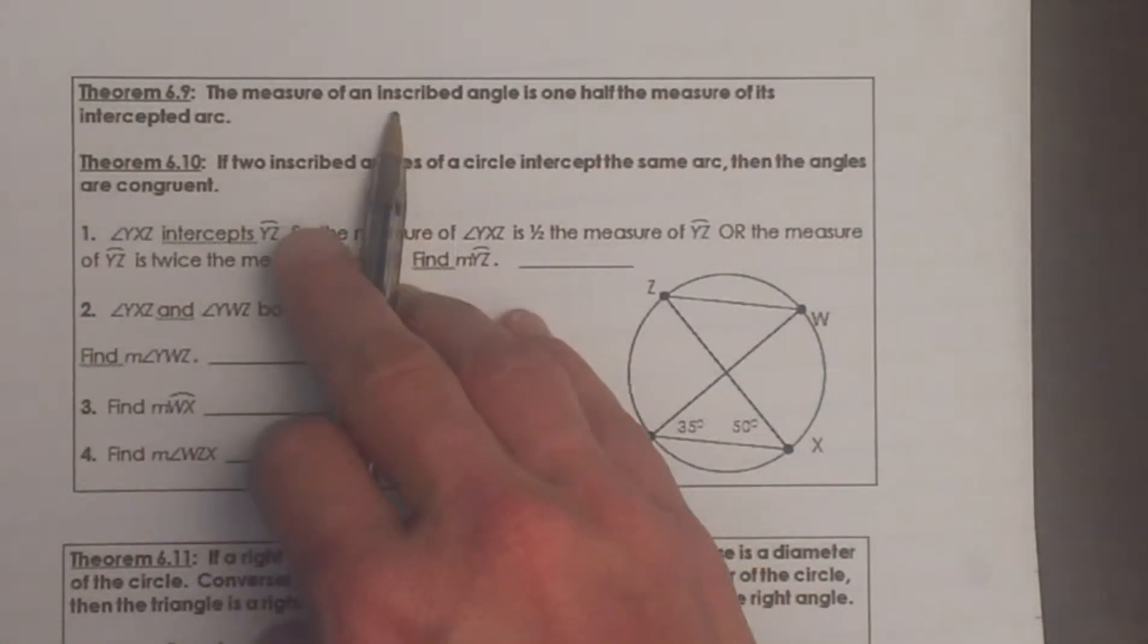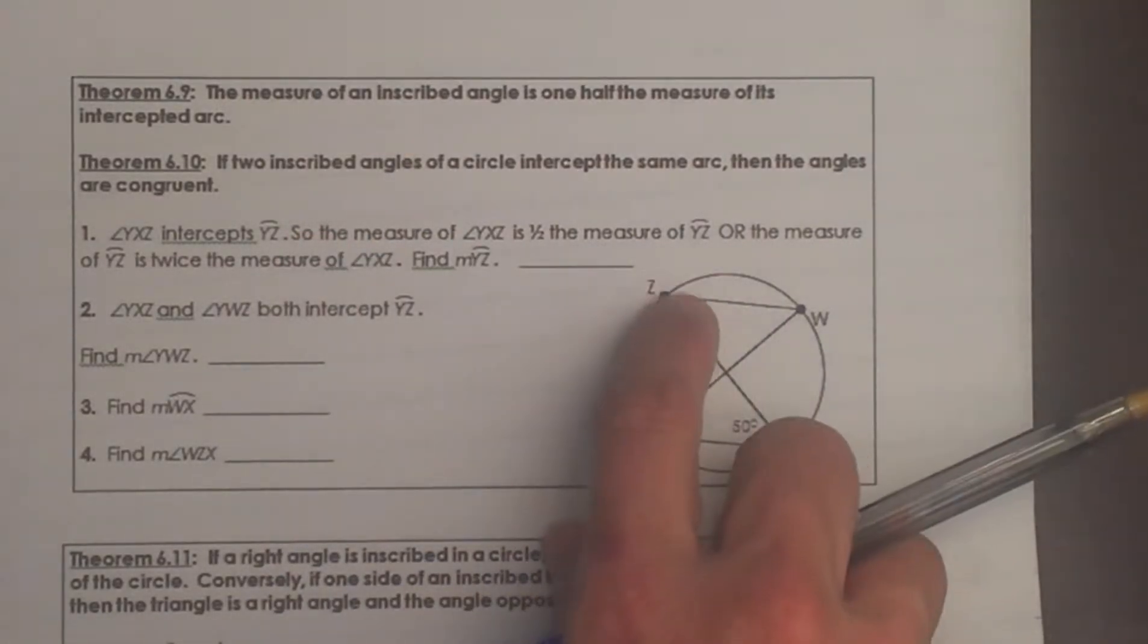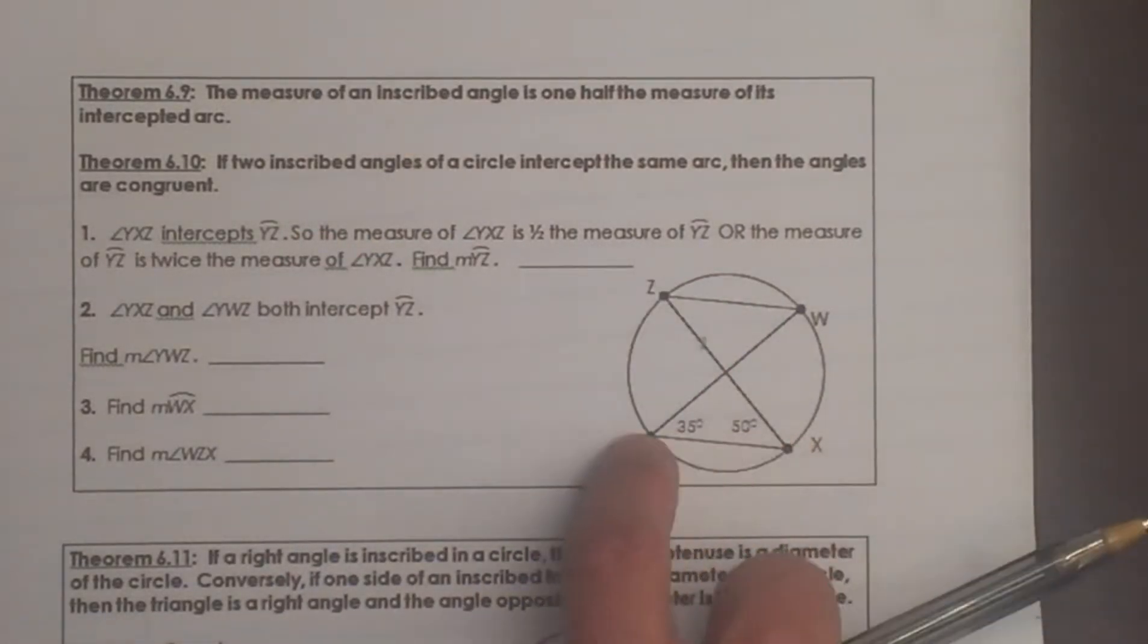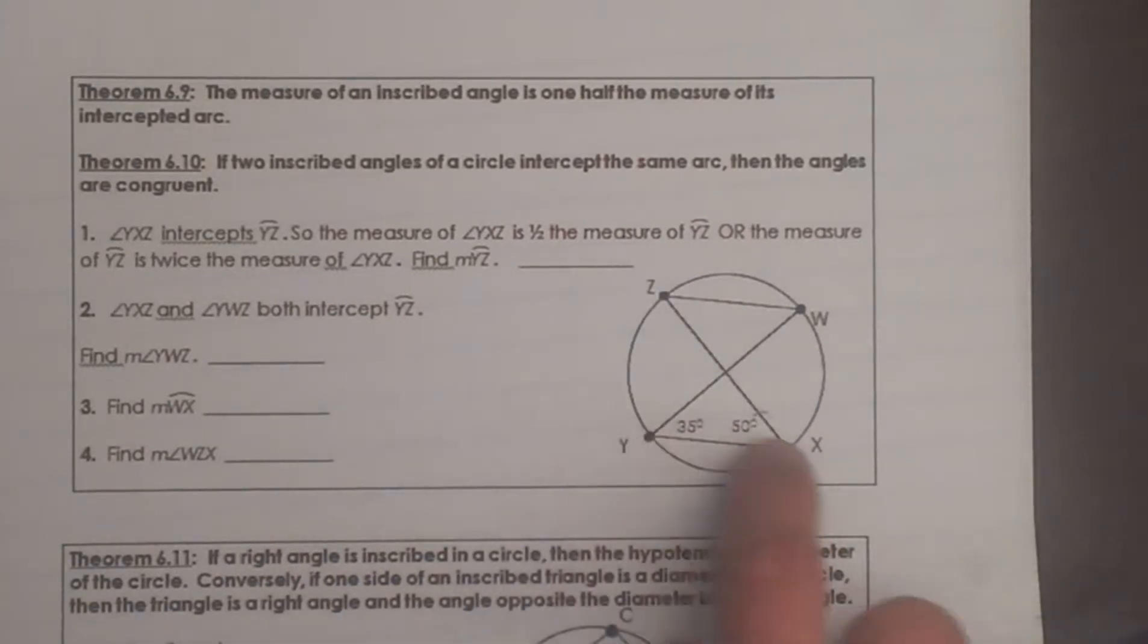Now what is an inscribed angle? It is an angle whose vertex lies on the circle. So here is a picture of one: z, x, y. This angle is inscribed because x is the vertex and it lies on the circle.